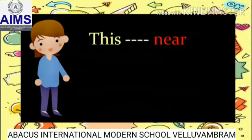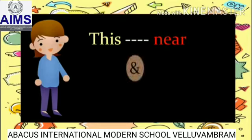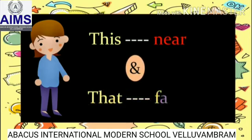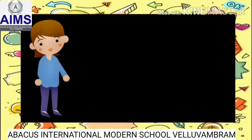If the object is near to us, we use 'this'. This is near and that is far. If the object or things is near to us, we use 'this'. If the object or things is far away from us, we use 'that'.